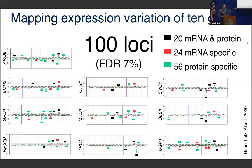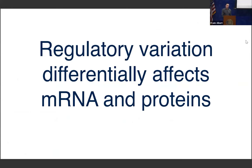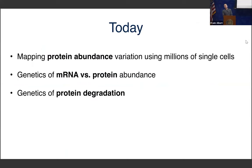Christian repeated this for a total of 10 genes, giving a total of exactly 100 loci at a 7% false discovery rate. The example I showed was not unusual — it's a minority of loci where we detect both RNA and protein in the same direction. We detect a small majority of loci only for proteins. So it really looks like there are protein-specific effects of genetic variation on protein abundance that you can't see at the RNA level. The question becomes: where do those come from?